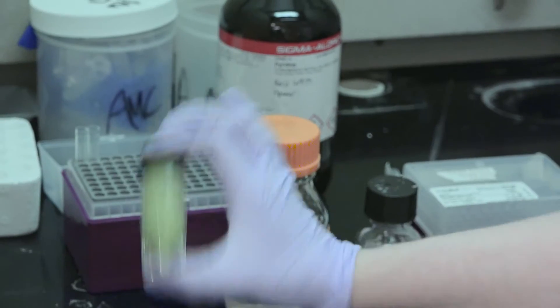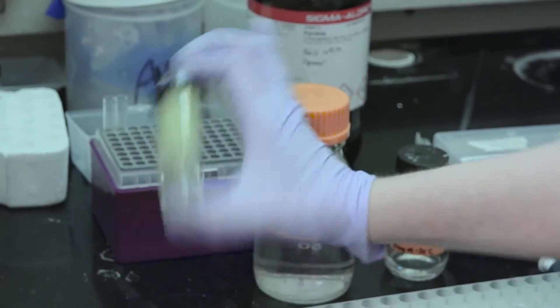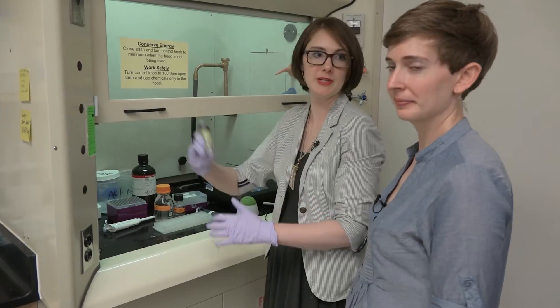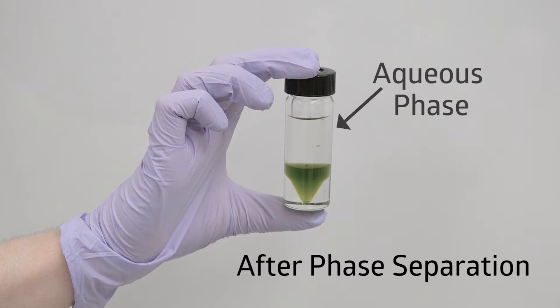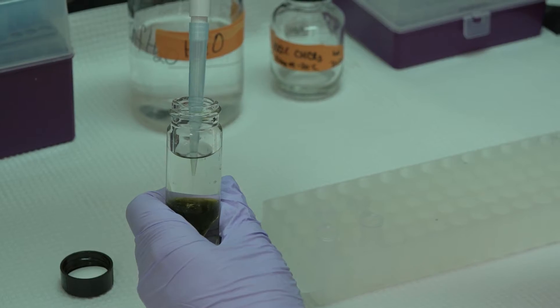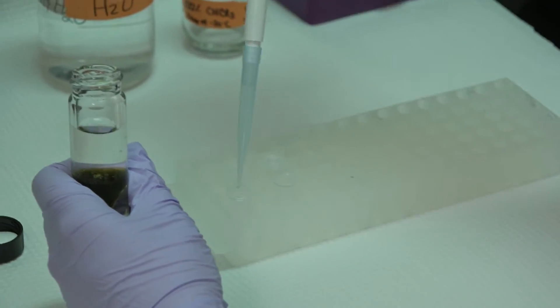So now we take our sample and we just shake it up really, really well because what we want to do is extract all of the metabolites from it. And we get something like this. So now we're going to just take the top phase, which is the aqueous phase. And this is the one that has the amino acids.